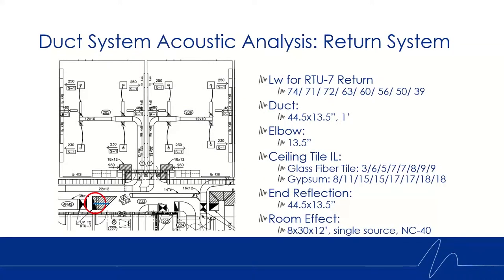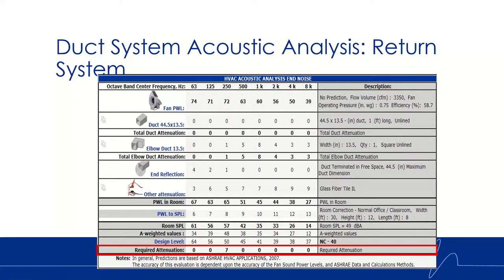We can do the same for the return system. We take the sound power levels — there aren't many duct elements here. Because the return terminates over a corridor that's not ducted, we take into consideration the sound energy lost as sound travels through the ceiling tiles between the occupied space and the return duct. Going through the calculation: sound power levels from the fan, deducting natural attenuation from all duct elements including ceiling tiles. We need an additional 7 dBs in the 250 Hz band to meet NC 40.